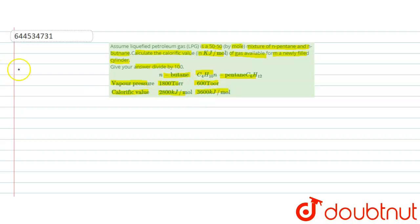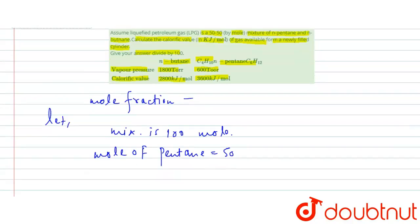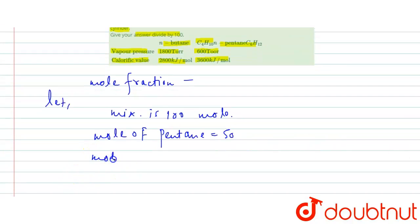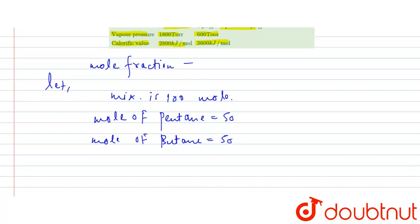First of all, we find mole fraction in liquid mixture. Let the mixture be 100 moles. Moles of pentane is equal to 50 and moles of butane equals 50.